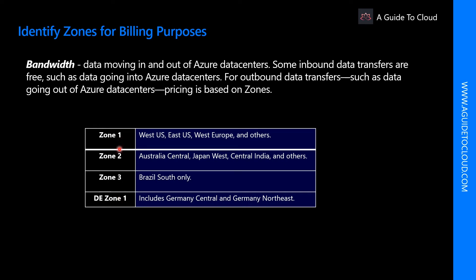In Zone 1, there is West US, East US, Canada West, West Europe, France Central, and others. In Zone 2, we have Australia Central, Japan West, Central India, Korea, Korea South, and others. In Zone 3, there is only Brazil South. And there is DE Zone 1, which includes Germany Central and Germany Northeast. Be aware that the zone for billing purposes is not the same as an availability zone in Azure — the term zone is for billing purposes only.